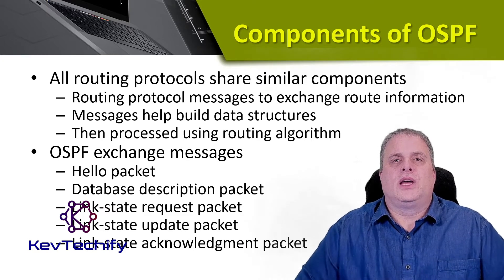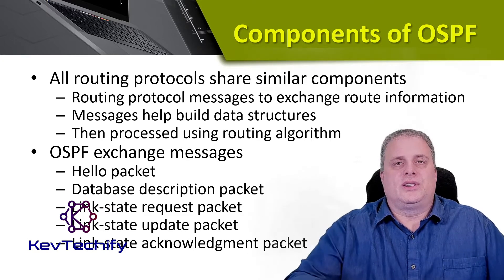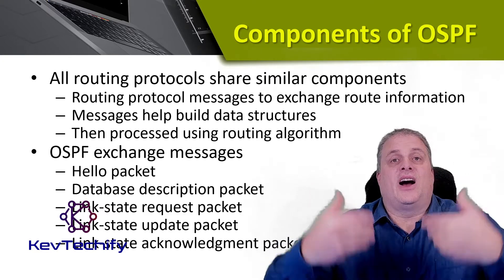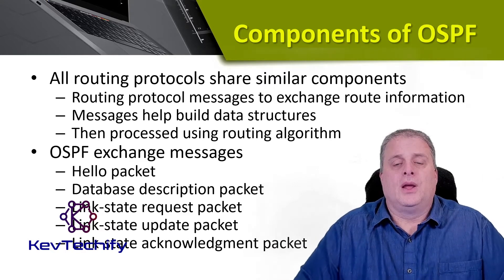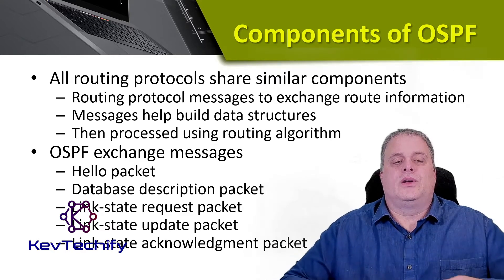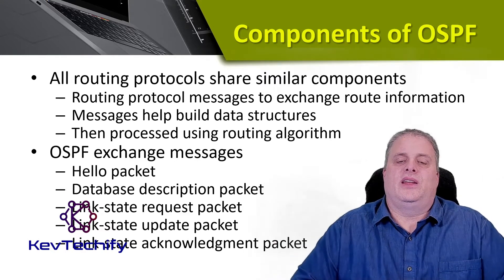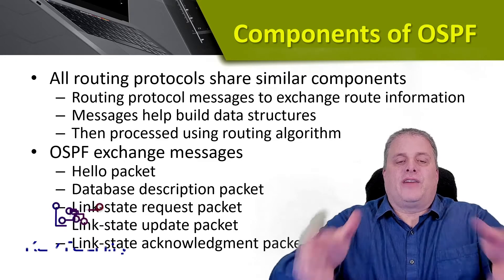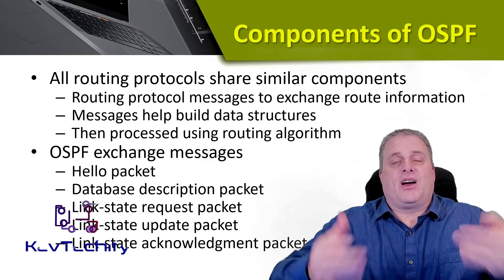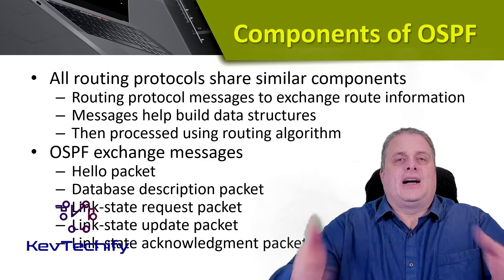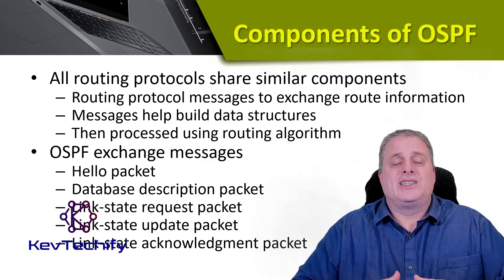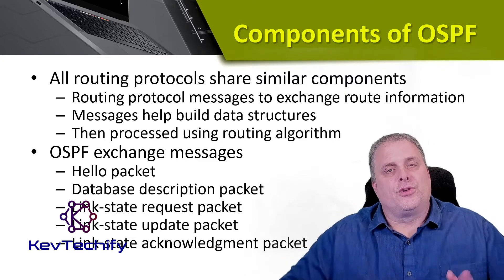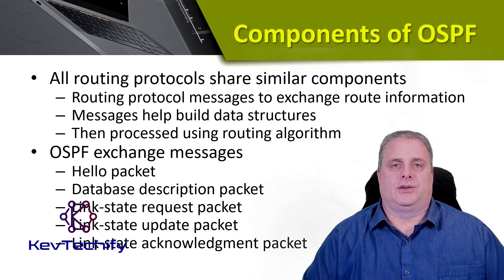The fourth message type is the link state update packet, which is sent in response to a link state request. And the fifth is the link state acknowledgement packet, where after you receive that update, you acknowledge it — because OSPF likes to have that full conversation.